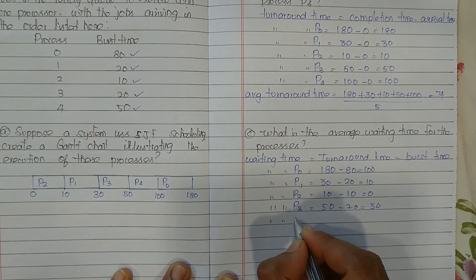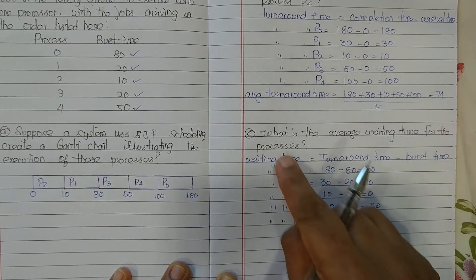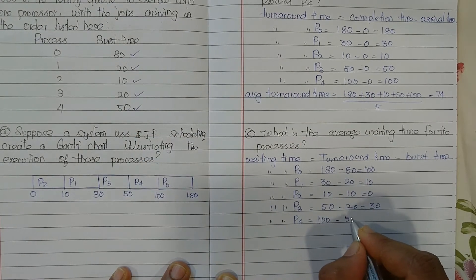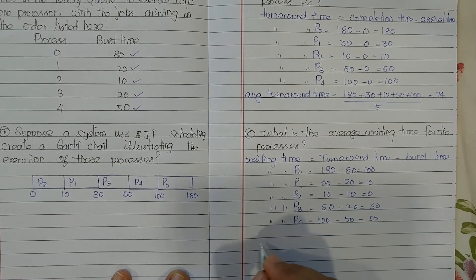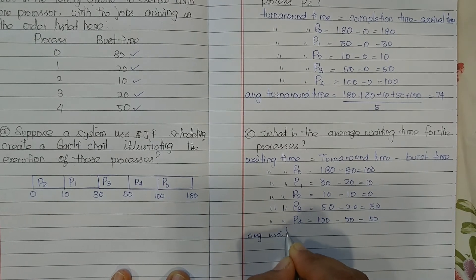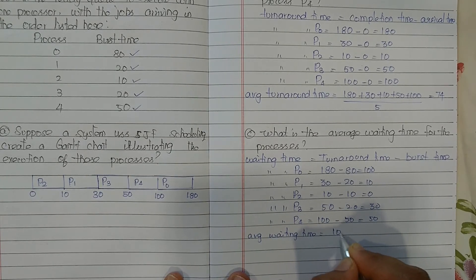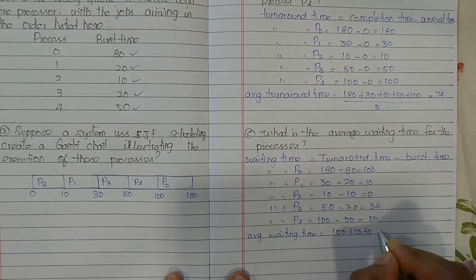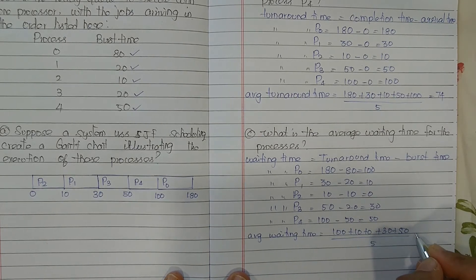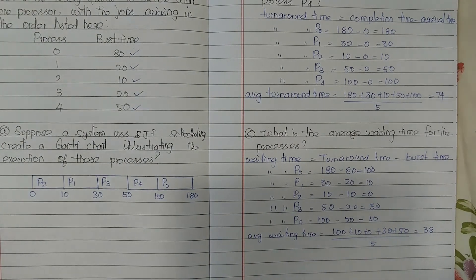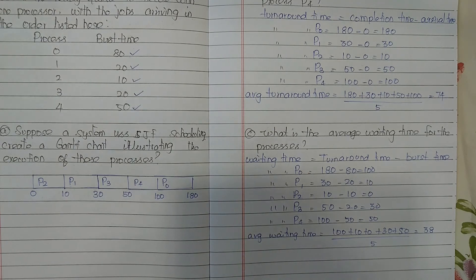Waiting time for P4: turnaround time is 100 minus burst time 50, so waiting time is 50. For the average: 100 + 10 + 0 + 30 + 50 = 190, divided by 5 processes, gives an average waiting time of 38 milliseconds. This concludes the Shortest Job First CPU scheduling algorithm. Thank you.